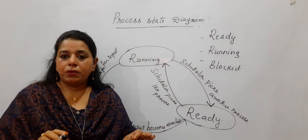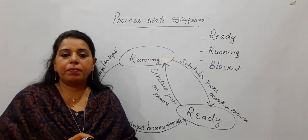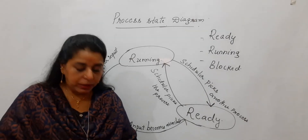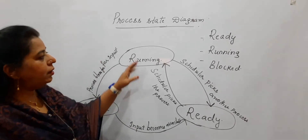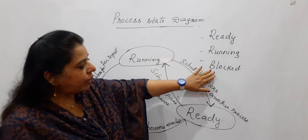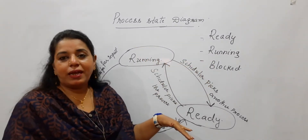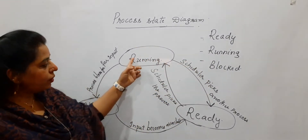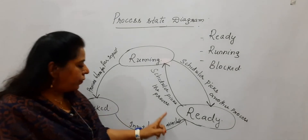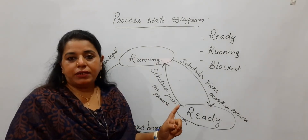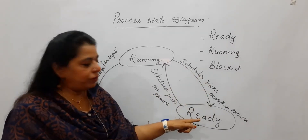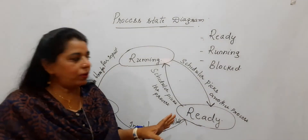A process, for execution, will first be brought into the main memory, and from there the CPU will have access to start executing it. That process will be in one of these states at any point of time — ready, running, or blocked. In the process state diagram, you explain in what situation a process moves from ready to running, from running to block, from block to ready, and under which events these transitions occur.